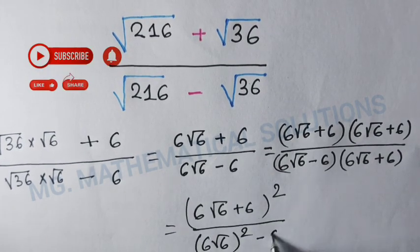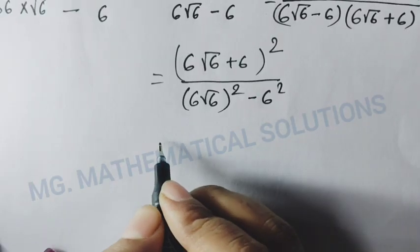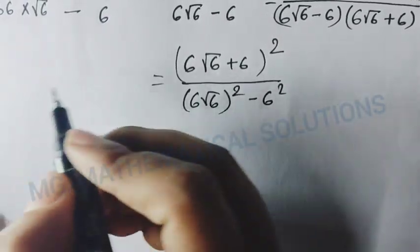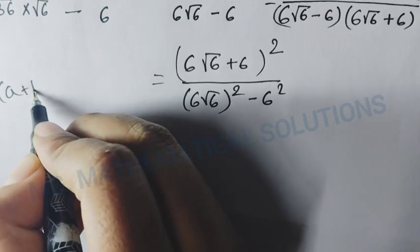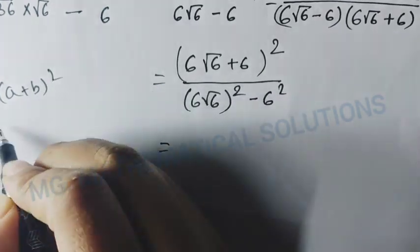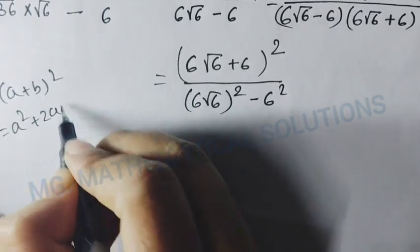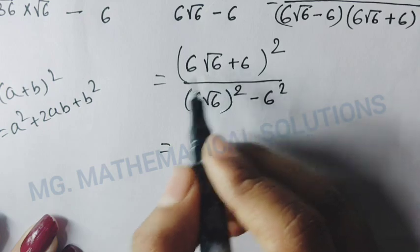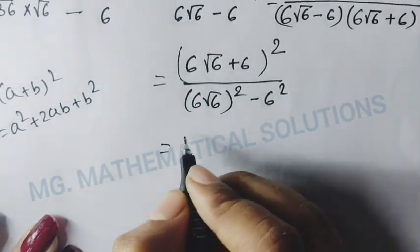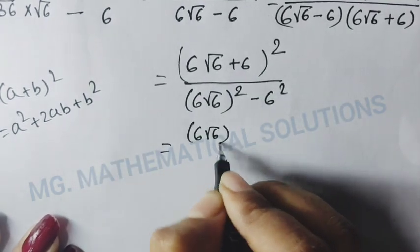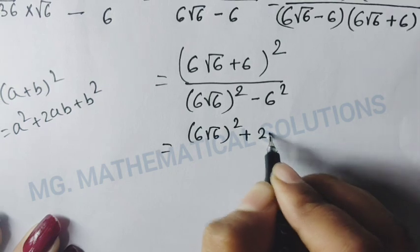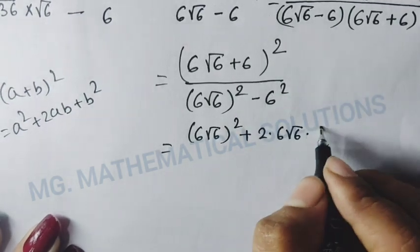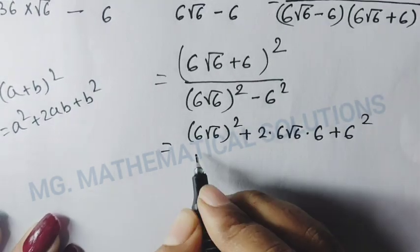For the numerator we apply the formula (a + b)² = a² + 2ab + b², where a = 6√6 and b = 6. This gives (6√6)² + 2 × 6√6 × 6 + 6².